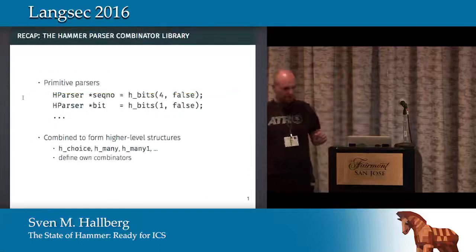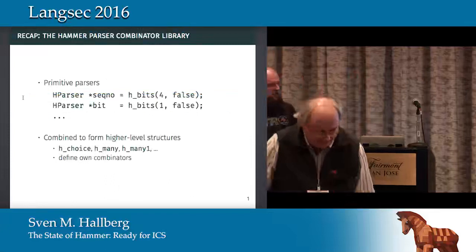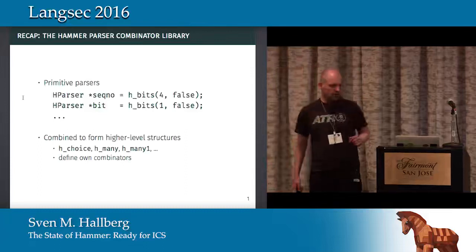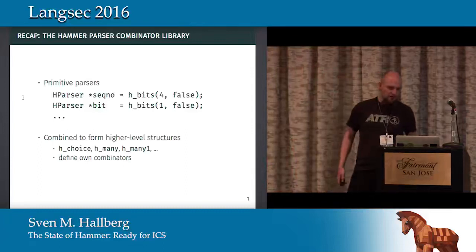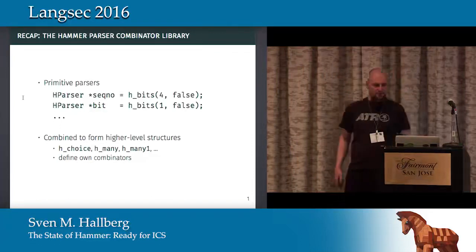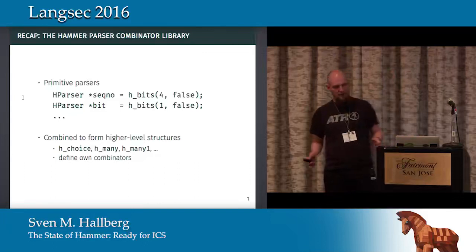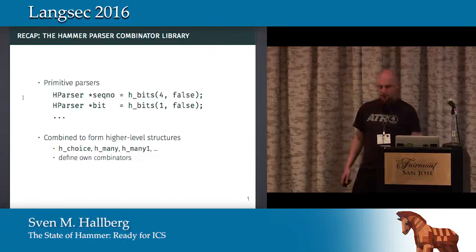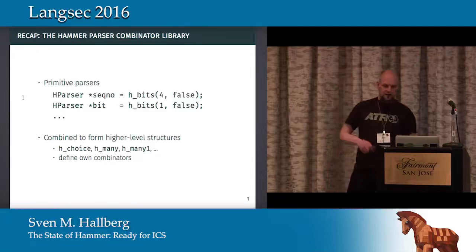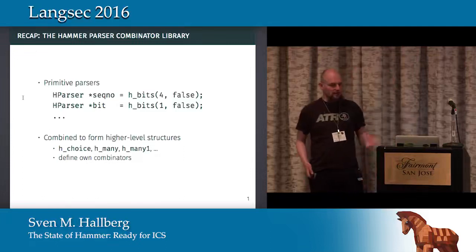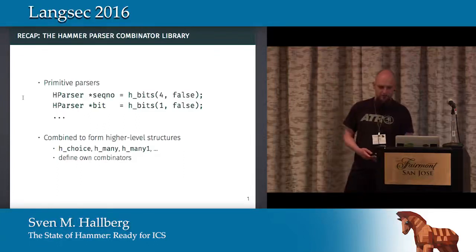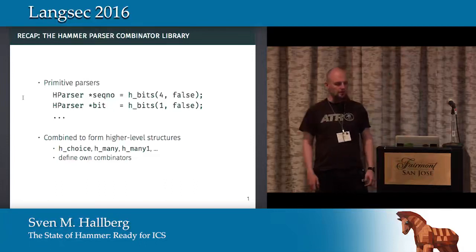To give you a quick recap, the Hammer Parser Combinator Library, for those of you who have not seen it, is a library meant to bring more grammatical parser specification into the world of C. We have primitive parsers that are then combined by higher-level combinators into more complex structures. You can also define your own combinators using those, and by that we hopefully arrive at a specification for our protocol which is at the same time a grammar and its implementation.